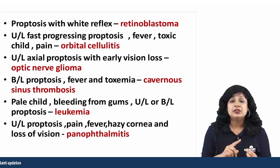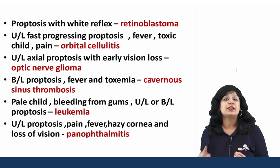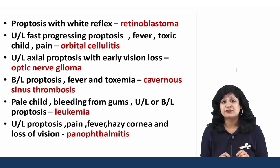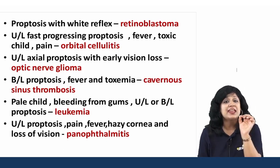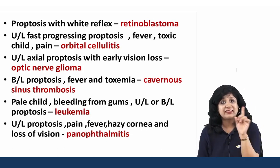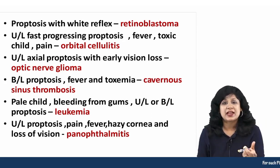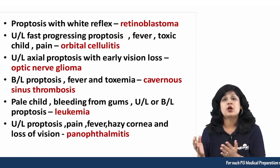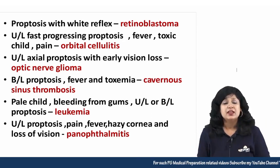If you have unilateral fast-growing proptosis with fever, with toxemia in a child, and there is pain — this is orbital cellulitis, the most common cause of unilateral proptosis in children.